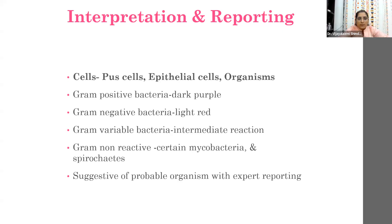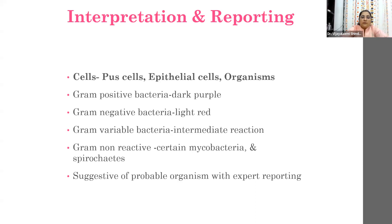Gram-positive bacteria appear dark purple. Gram-negative bacteria appear light red. Gram-variable bacteria show an intermediate reaction — for example, Acinetobacter and gram-negative coccobacilli can be slightly gram-variable and may be confused with Staphylococcus. Gram-non-reactive organisms include mycobacteria and spirochetes, which are not stained by Gram stain. At the end of reporting, you can write probable organisms based on morphology.